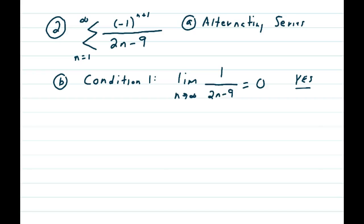Problem 2, summation n equals 1 to infinity of the alternating series, negative 1 to the n plus 1, over 2n minus 9.